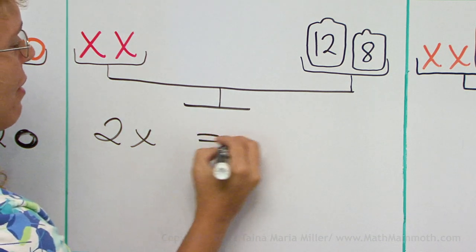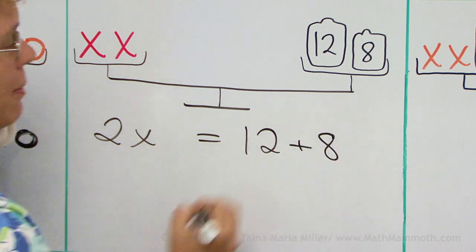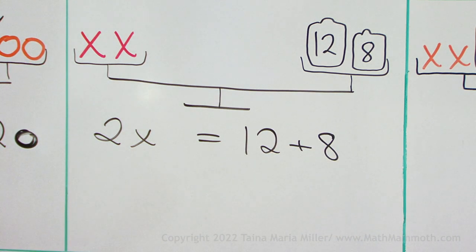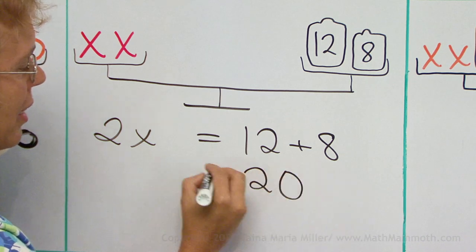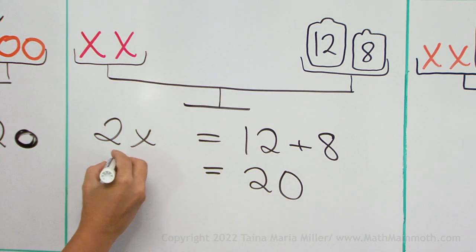On this side we have 12 plus 8. Now, you want to add those 12 plus 8, right? That's 20. So I'm going to simplify this equation. It's 2x equals 20.